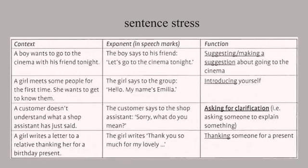In the third column, the functions are underlined. You can see from the table that we use the -ing forms of verbs, e.g. suggesting, asking, to name functions. The words after the function in the third column are not the function — they are the specific topics that the functions refer to in these contexts.